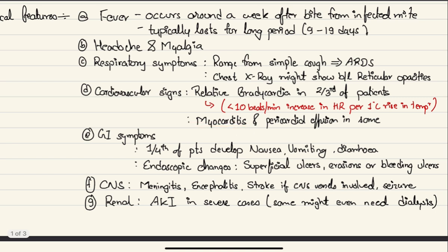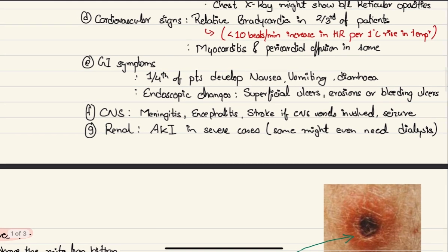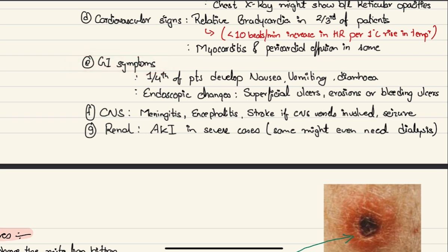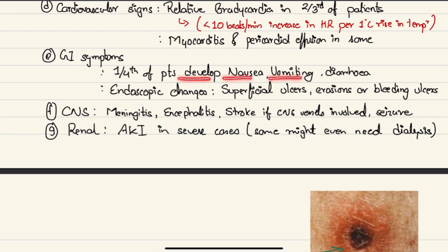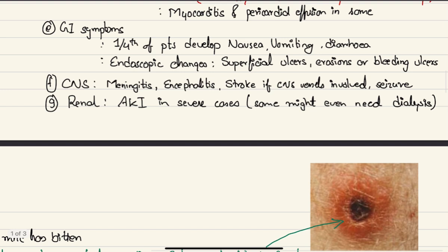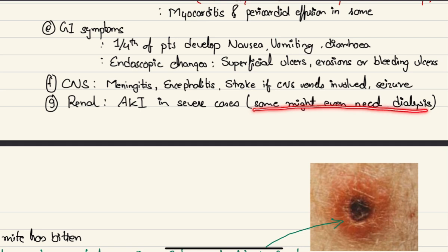Other cardiovascular manifestations may include myocarditis and pericardial effusions, though these are uncommon. GI symptoms can cause confusion with diseases like salmonella typhoid — one fourth of patients with scrub typhus may develop nausea, vomiting, or diarrhea, and endoscopic changes may show superficial ulcers, erosions, or actively bleeding ulcers. CNS manifestations include meningitis, encephalitis, stroke if vessels are involved, and seizures. In severe cases, acute kidney injury may occur and some patients may even need dialysis.